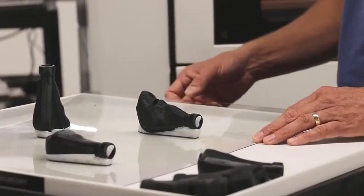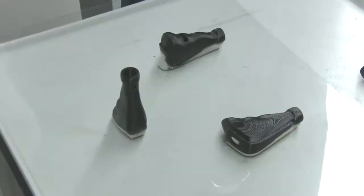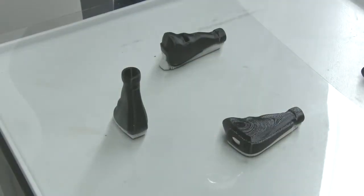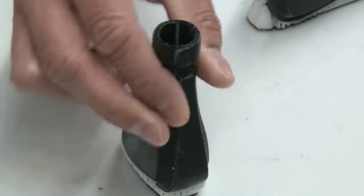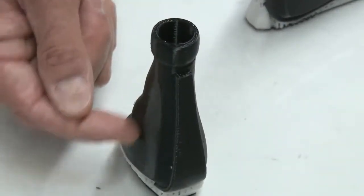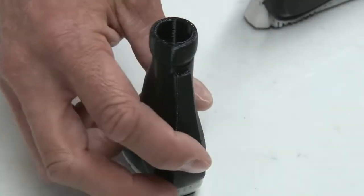What we have here on this build sheet is the same part built in three different orientations. The part that was built upright with the tallest Z has a much smoother surface finish on it.